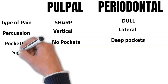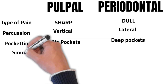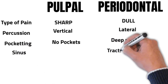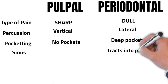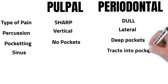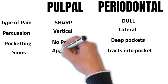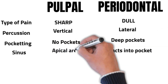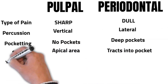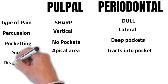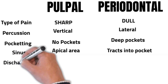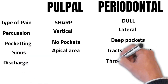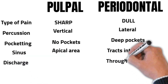If you investigate the sinus around a periodontal pathology, it usually leads and tracks into the pocket itself, whereas with pulpal pathology, the probing may lead to the apex.